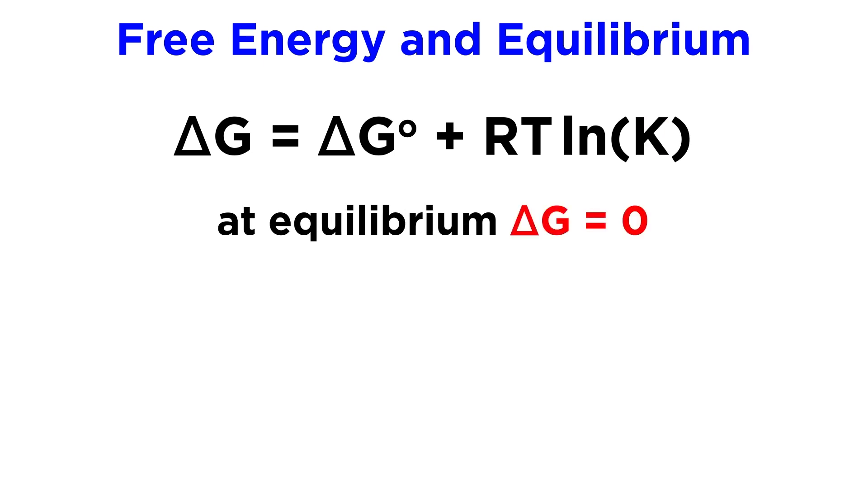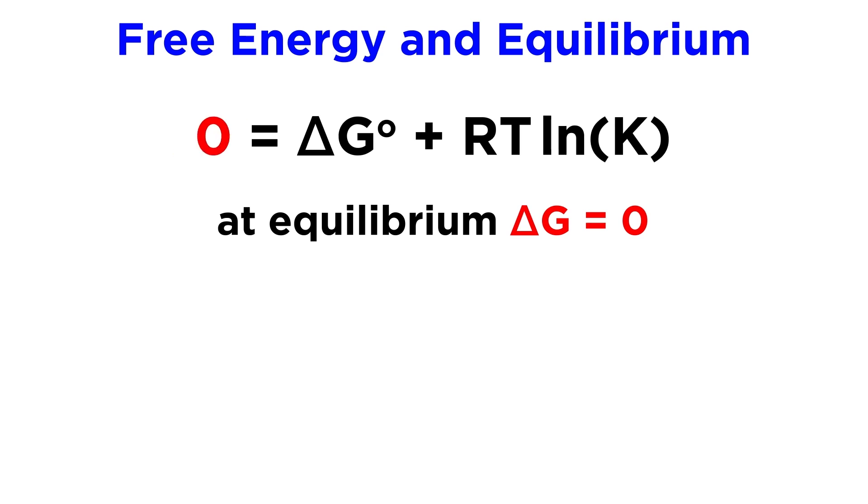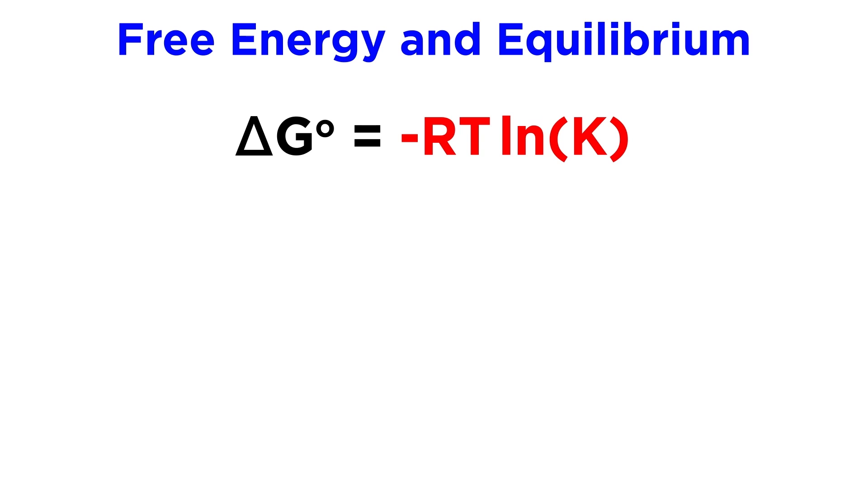We also know that for a system at equilibrium delta G equals zero, so where we see delta G we can plug in zero. Now let's move this term to the other side so that it's negative, and we end up with this expression for standard change in free energy as it relates to the equilibrium constant.